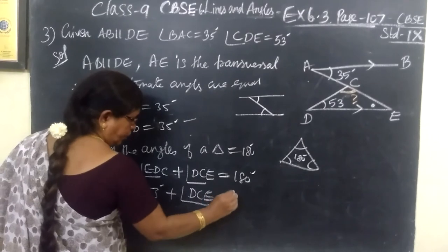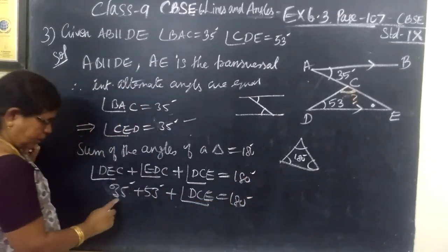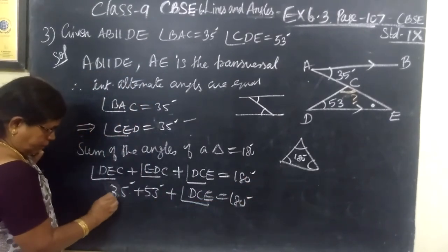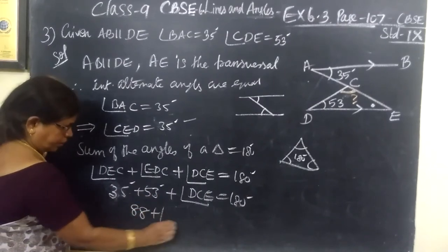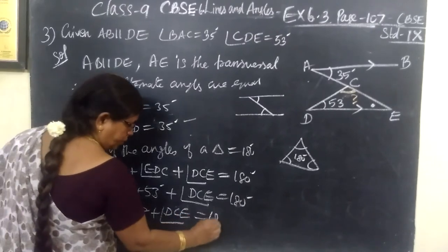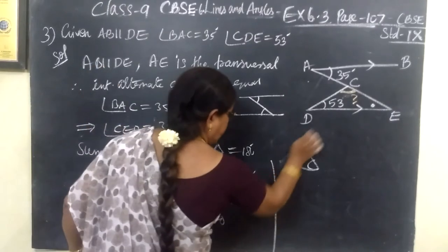If you add, 35 plus 53 equals 88. Then 88 plus DCE equals 180.